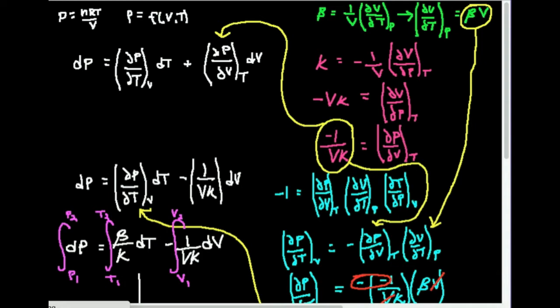If I want to calculate a change in pressure, the differential form is: dP equals the partial of P with respect to T at constant V times dT, plus the partial of P with respect to V at constant T times dV. Integrating all of this from P1 to P2 gives delta P, with the temperature integral from T1 to T2 and the volume integral from V1 to V2.